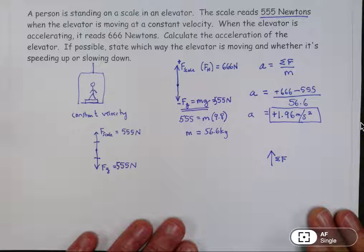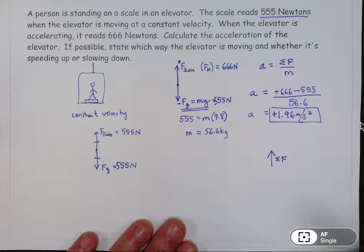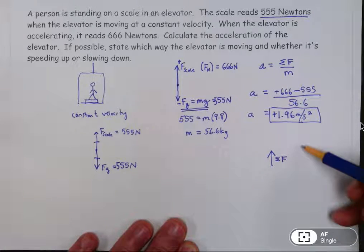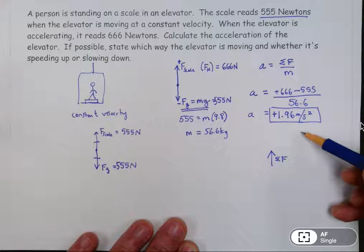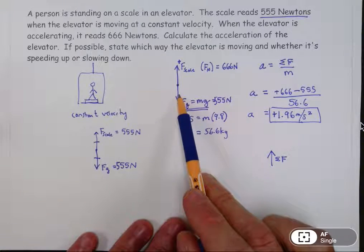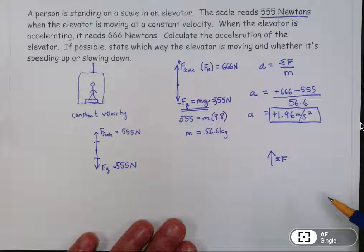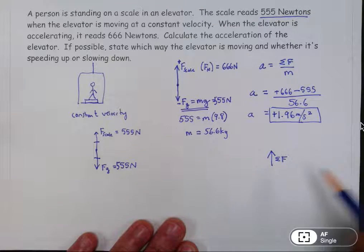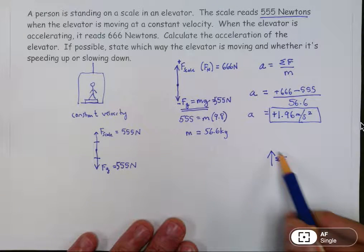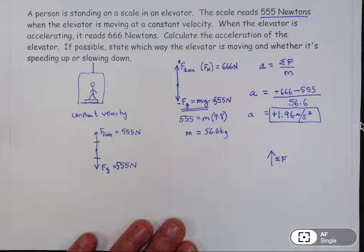So we have to ask ourselves, does that tell us for sure whether it's moving up or moving down? Well, the answer is no. Because you can be moving up in an elevator and have more upward force than downward force. You can also be moving down in an elevator and have more upward force than downward force. So both of those situations are possible. Does it tell us whether it's speeding up or slowing down? Again, no, it doesn't. We can't tell that because all we know is that the net force is upward.